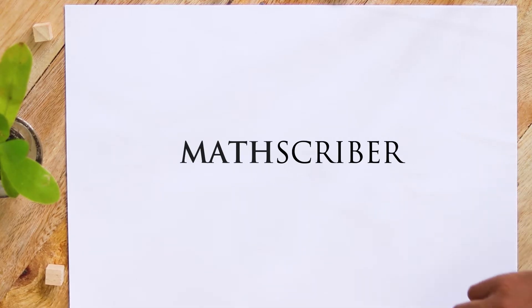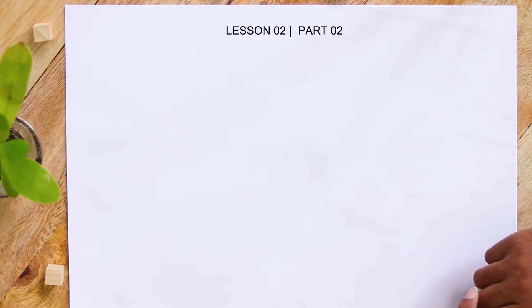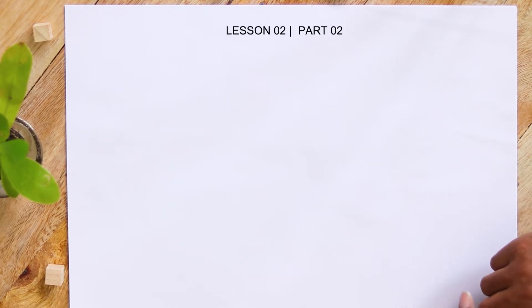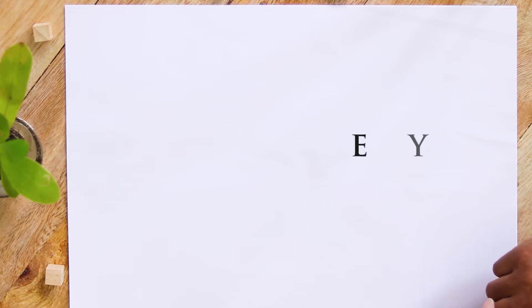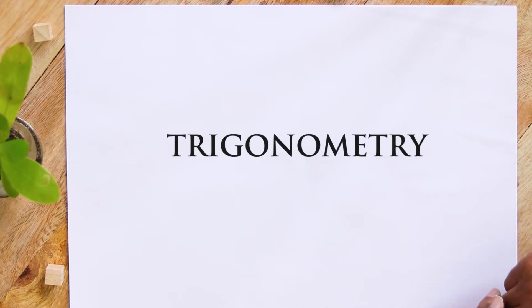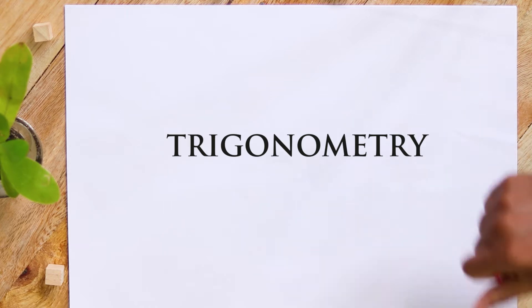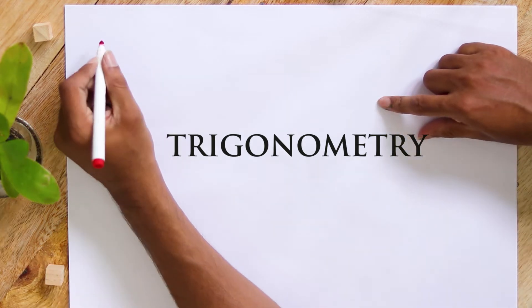Hi, I welcome you all to MathsTriber. This is part two of lesson number two of the trigonometric tutorial series. In the previous part, I discussed the quadrant rule for trigonometric value conversions, and I'll be doing two example questions here. This is the first example.